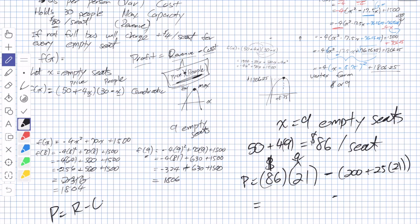There's our revenue. What is our cost going to be? Remember, the cost is $200 plus $25 a person. So $200 plus 25 times 21. So some more difficult math. So our business can become very math heavy. Can you do 86 times 21 for me? 1,806 minus 525 plus 200. So 1,806 subtract 725. What's that going to equal? 1,081. So they would maximize profit. The max profit they can get is $1,081. That's if they have 9 empty seats, so they sell 21 tickets. And they sell the tickets at $86 a seat. Hard question.